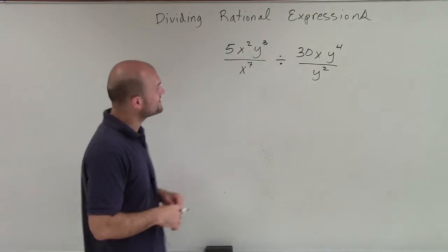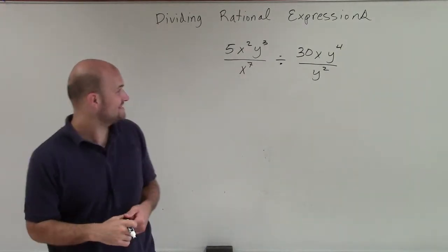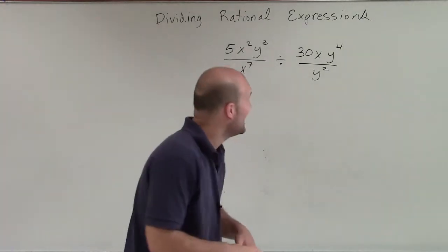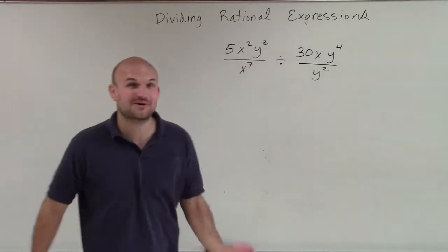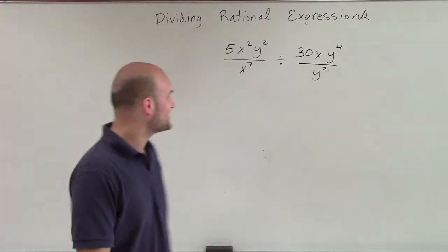Welcome. So what I have here is 5x squared y cubed divided by x to the seventh divided by 30xy to the fourth divided by y squared. And that just sounds crazy as I just keep on spitting it off, doesn't it?